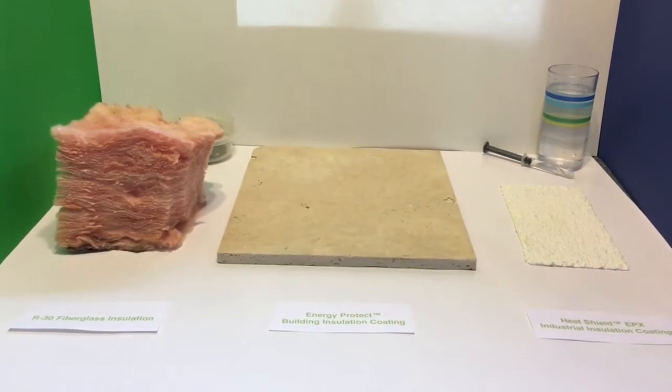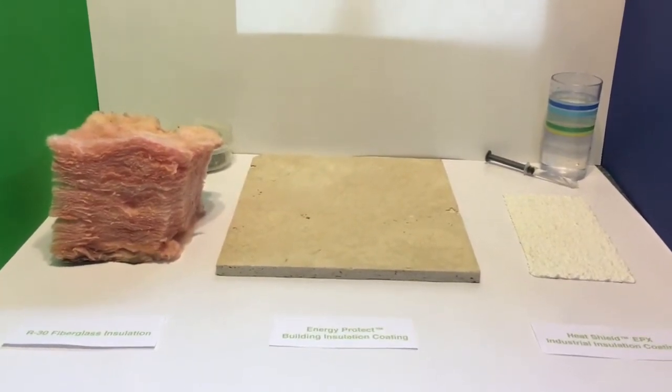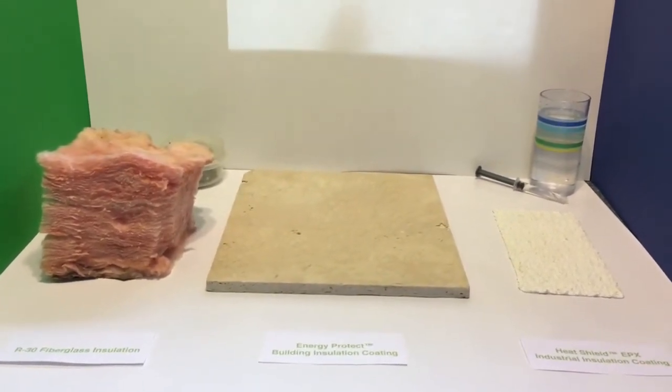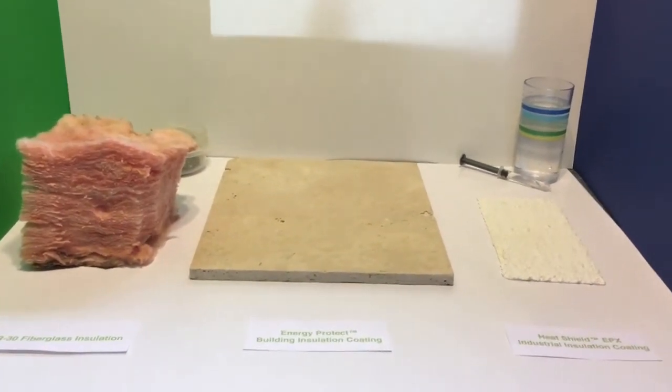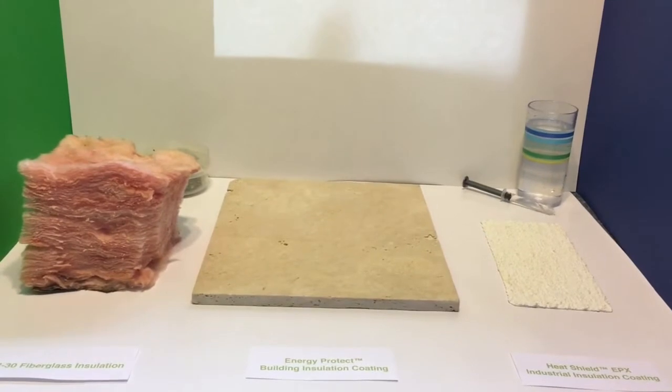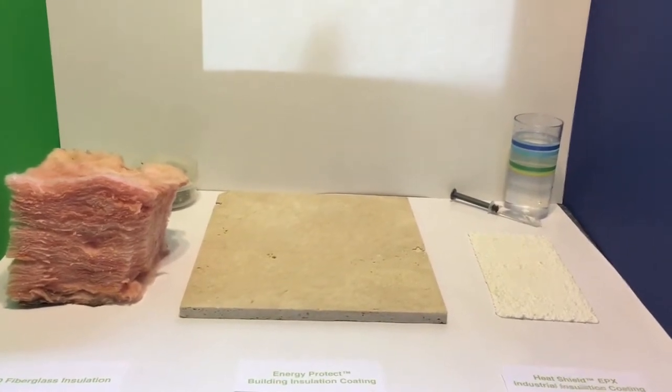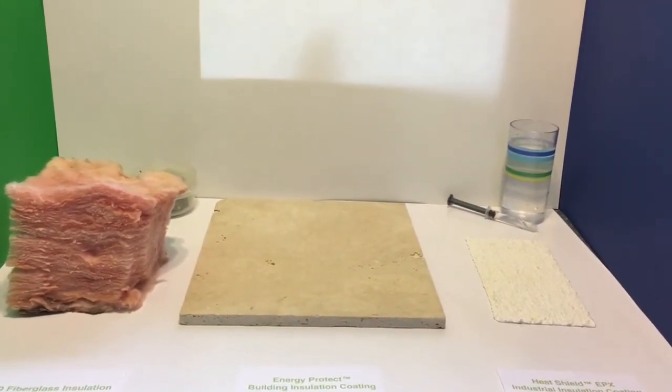What happens when a thin film thermal insulation coating like ours gets compressed, gets dirty, or gets moist or wet? Well, not much, because our coatings are designed to repel moisture, dirt can't get into them once they're dry, and compression's not even an issue.